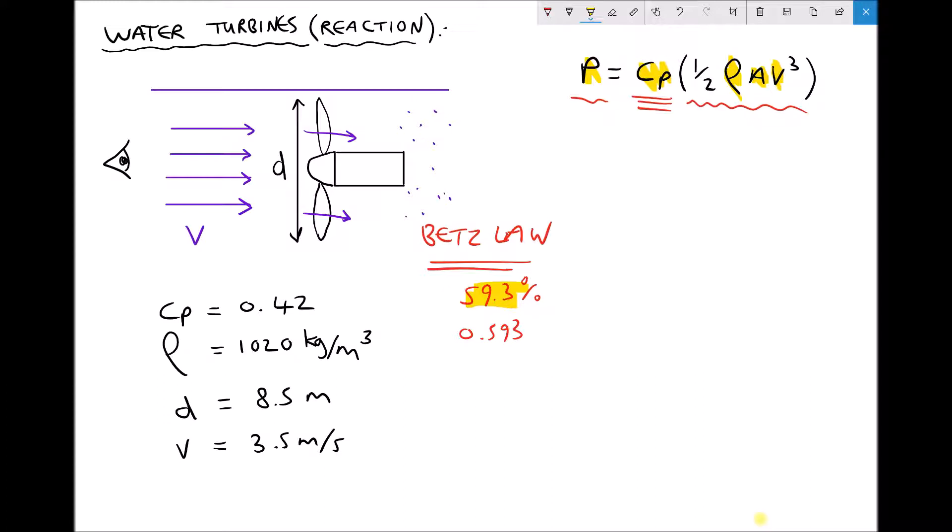So in the example here, we're going to have a coefficient of power of 0.42. We have various other data in the bottom left hand corner. We have the density of the fluid or the water as 1020 kg per meter cubed. We have a diameter of the rotor equal to 8.5 meters, and we have a velocity of the fluid equal to 3.5 meters per second. So really all we're going to be doing here is plugging in our values.